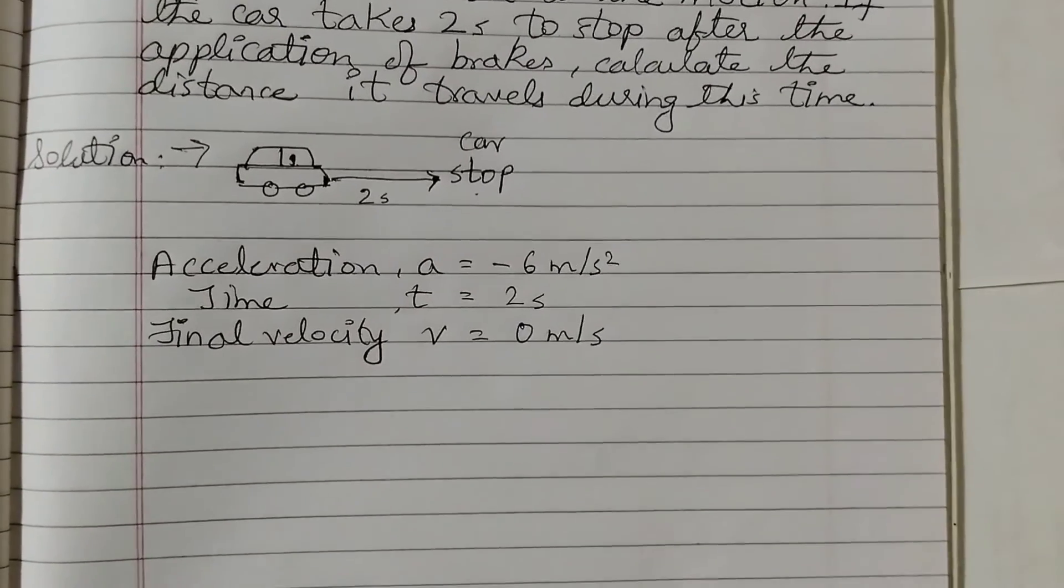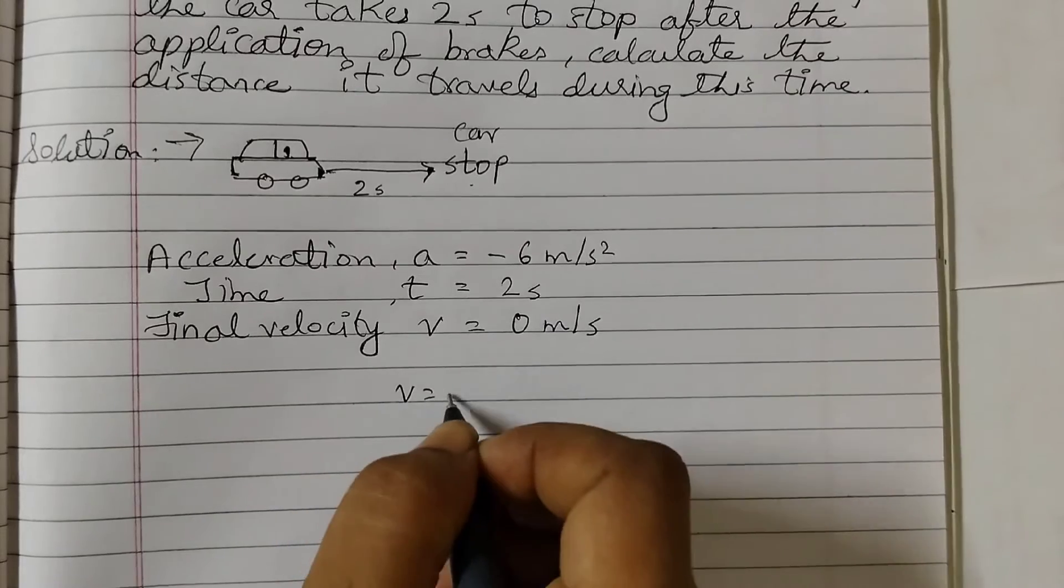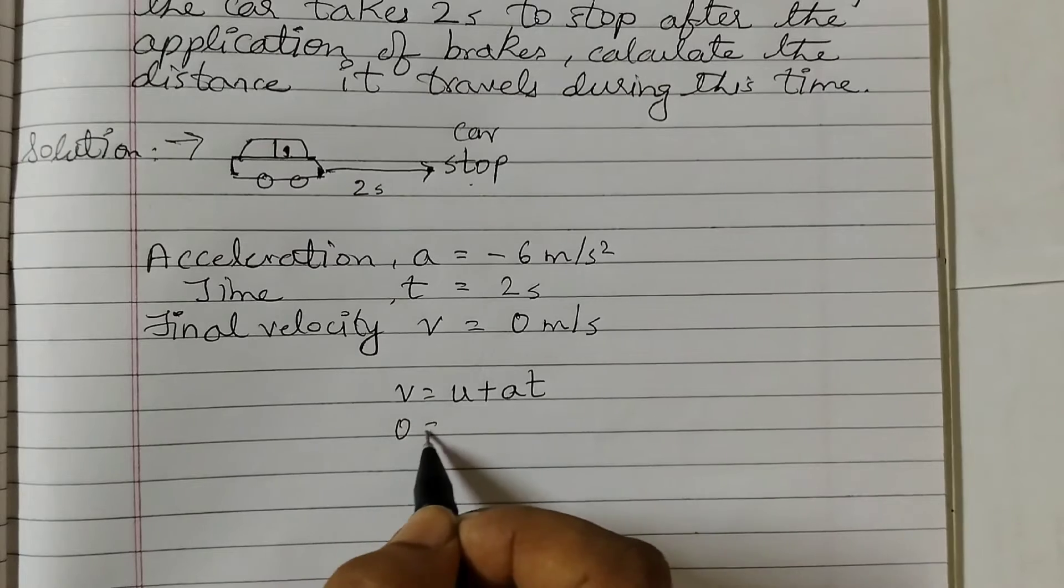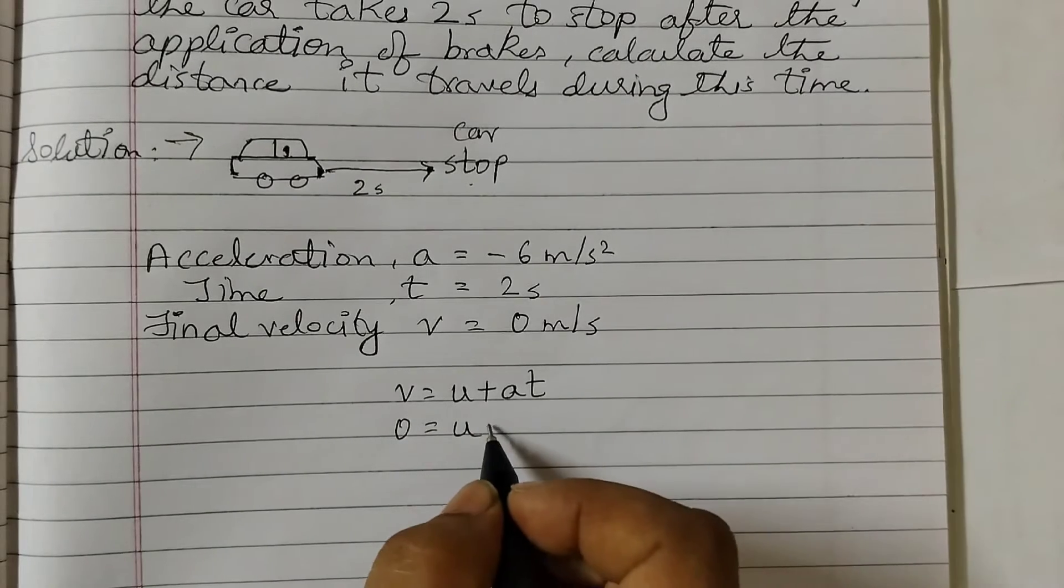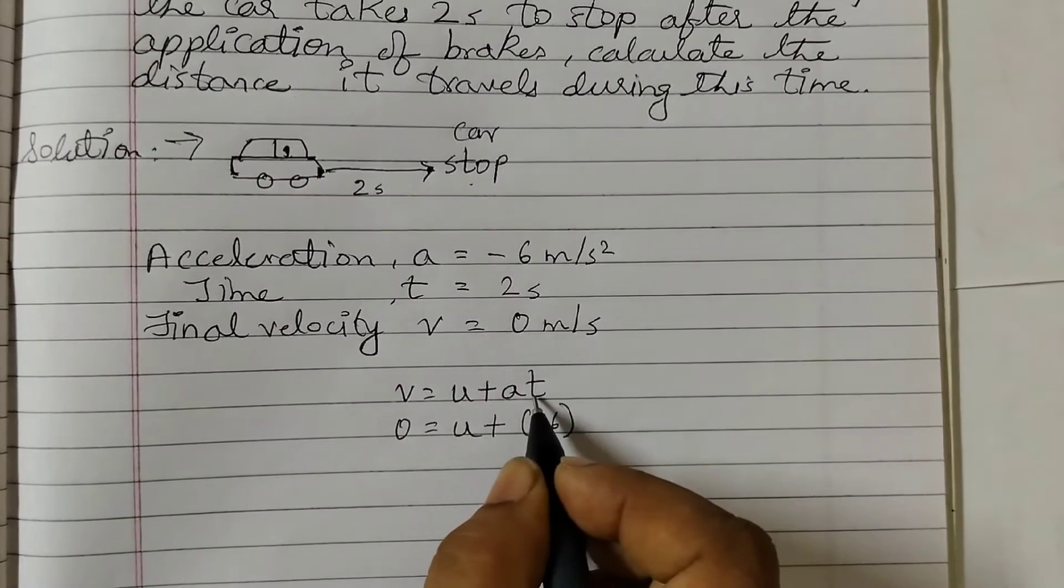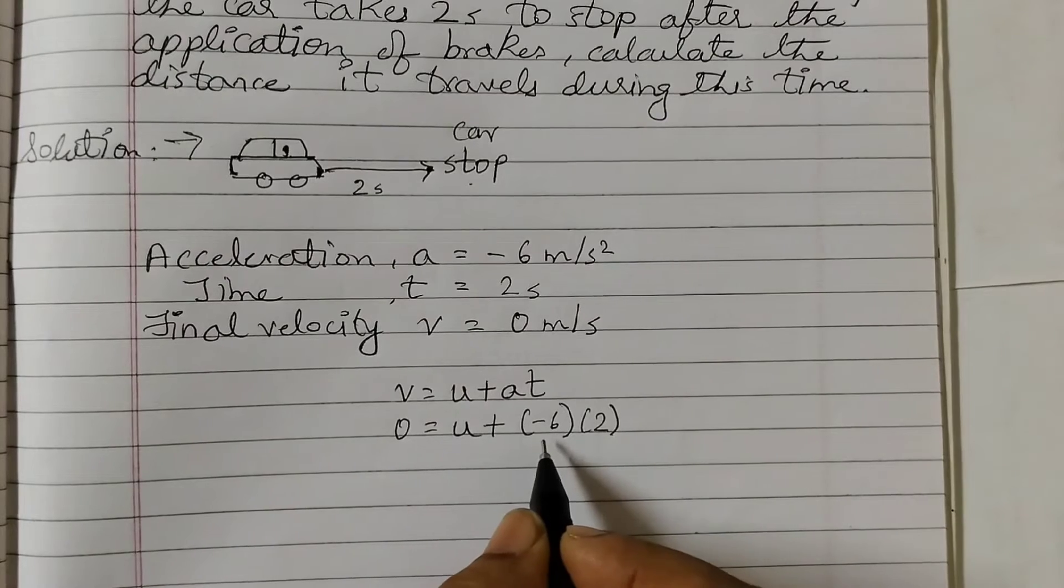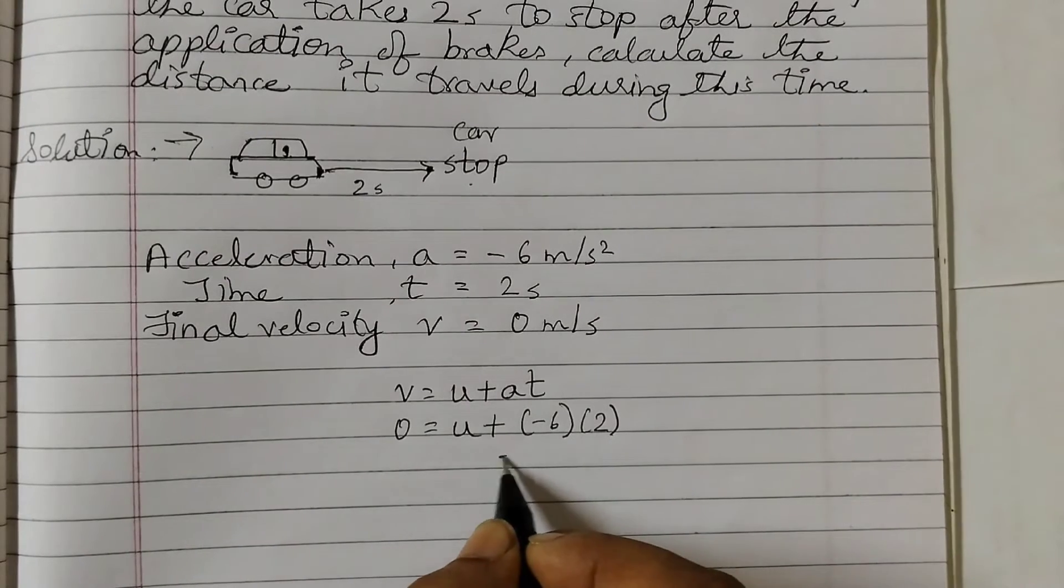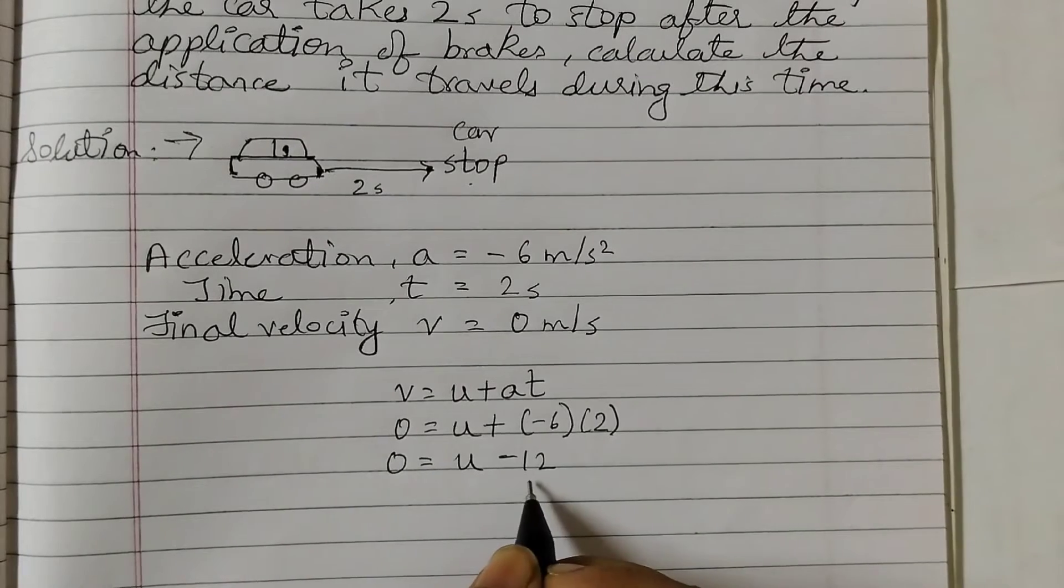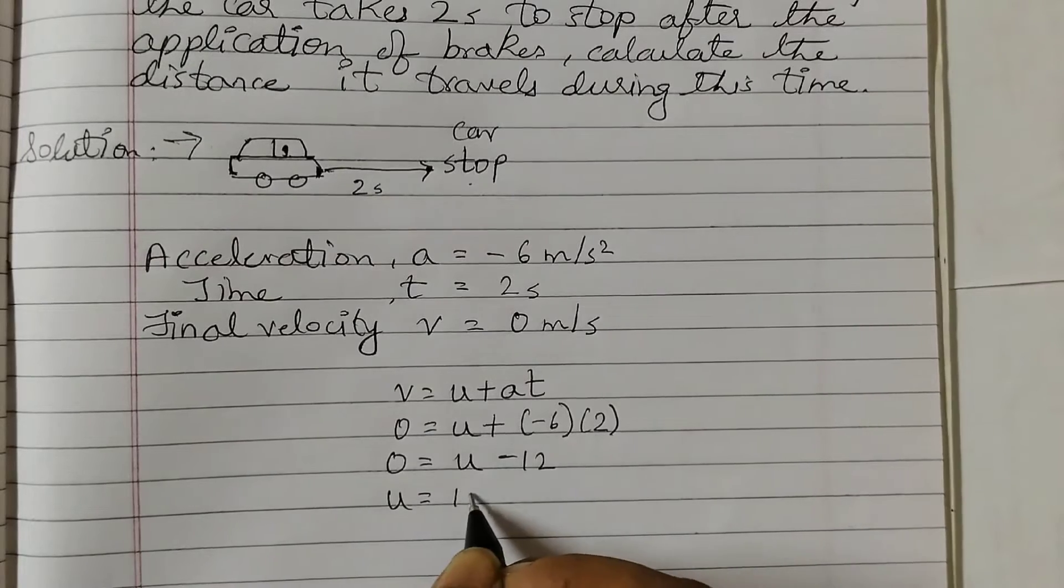First we will find out the initial velocity using the formula v equals u plus at. V is 0, u is unknown, plus a is minus 6, t is 2 seconds. So this is minus 6 into 2 is minus 12. 0 equals u minus 12. Get 12 to the other side, so u equals 12.